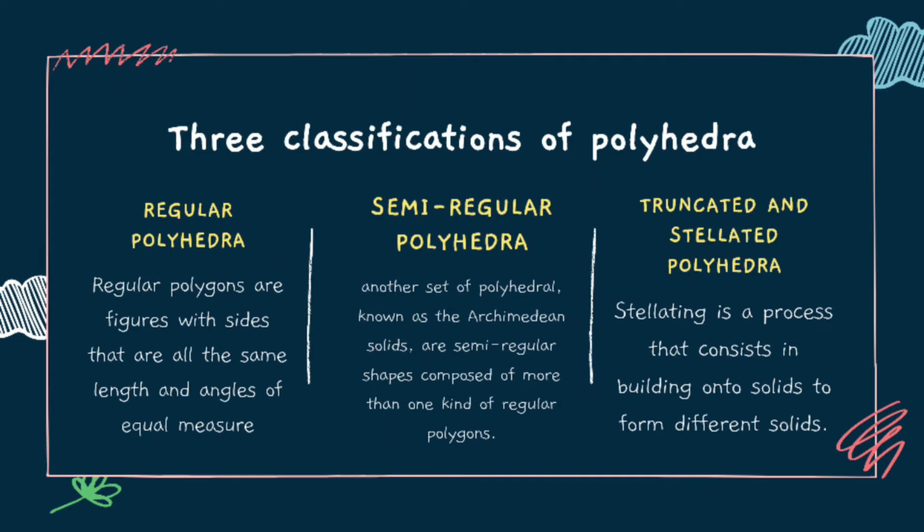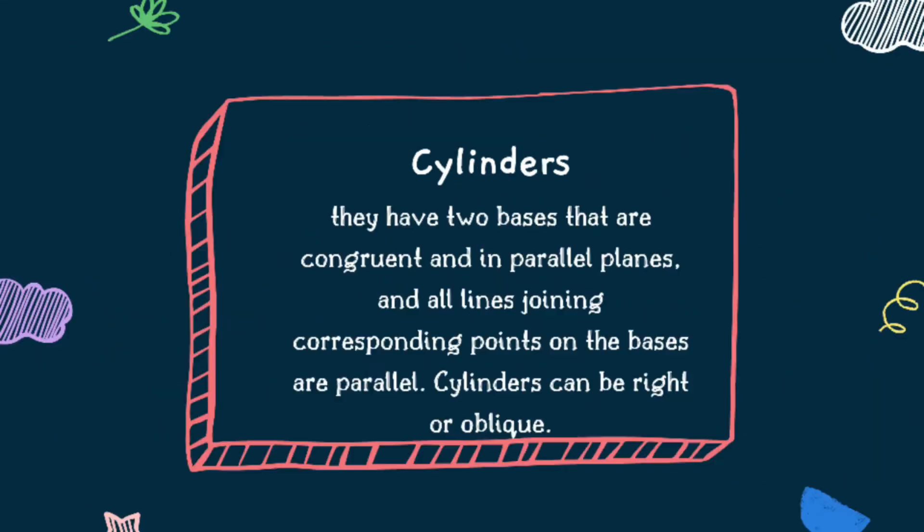Second is the semi-regular polyhedra, another set of polyhedron known as the Archimedean solids or semi-regular shapes composed of more than one kind of regular polygons. The third classification of polyhedra is the truncated and stellated polyhedra. Stellating is a process that consists in building onto solids to form different solids. It is also possible to modify solids by cutting off sections in a systematic way. This process is known as truncating.